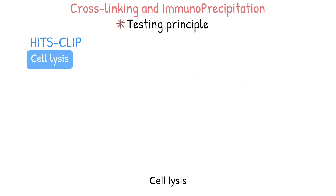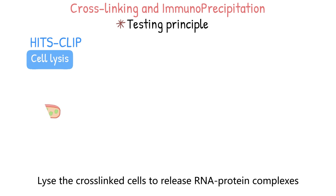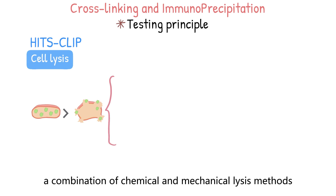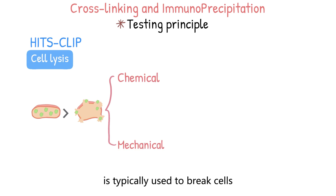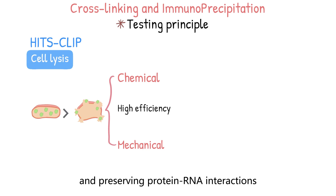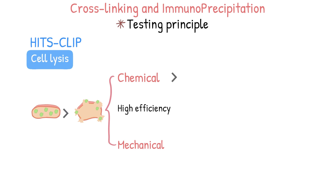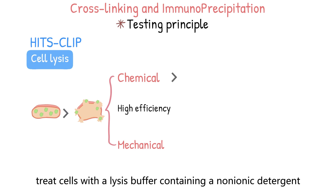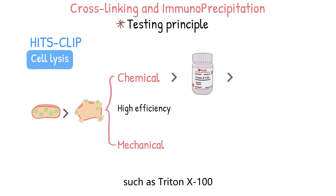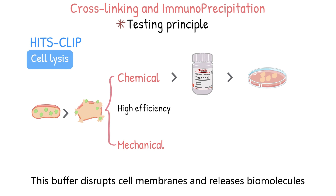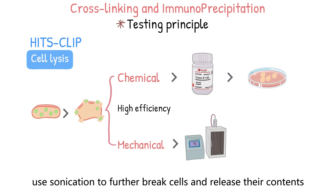Step 2: Cell lysis. Lyse crosslinked cells to release RNA-protein complexes. In the lab, a combination of chemical and mechanical lysis methods is typically used to break cells, ensuring high efficiency and preserving protein-RNA interactions. For chemical lysis, treat cells with a lysis buffer containing a non-ionic detergent such as Triton-X100. This buffer disrupts cell membranes and releases biomolecules. For mechanical lysis, use sonication to further break cells and release their contents.